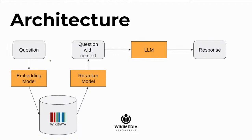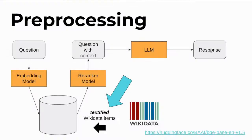For the architecture: we take the user's question and create an embedding — a vector representing its meaning — using an embedding model. We use that vector to look up the 13,000 WikiData items for chunks that match the meaning of the question. We then use a re-ranker model to re-rank the retrieved chunks, selecting the most likely ones to answer the question, which are added into the LLM prompt.